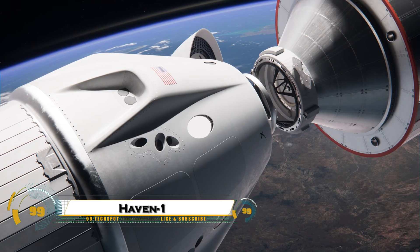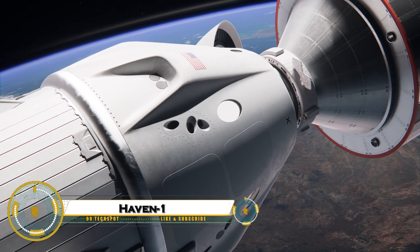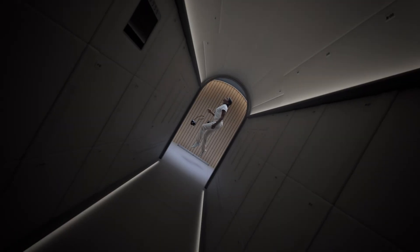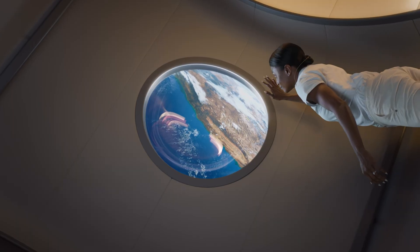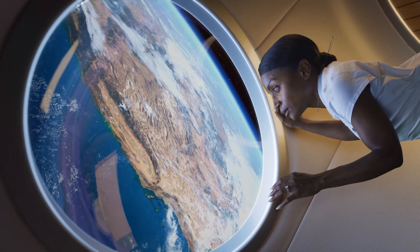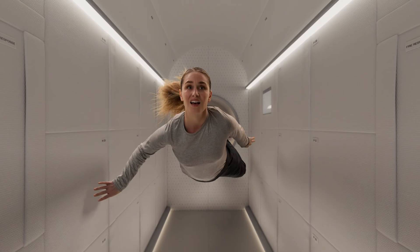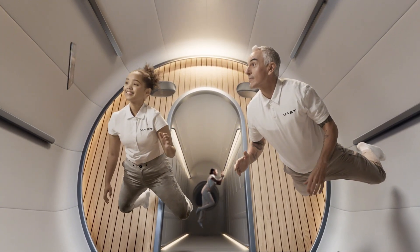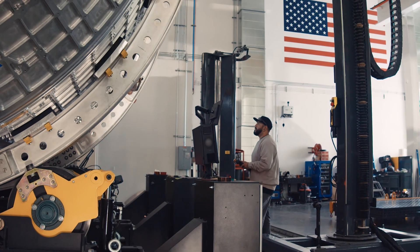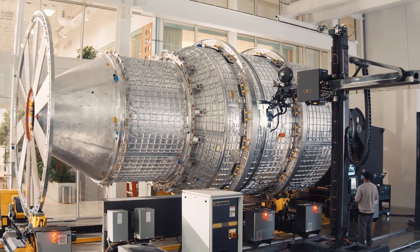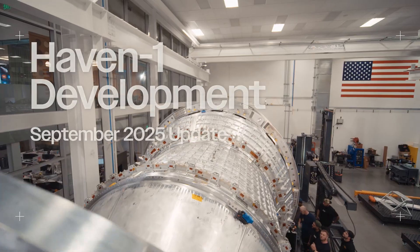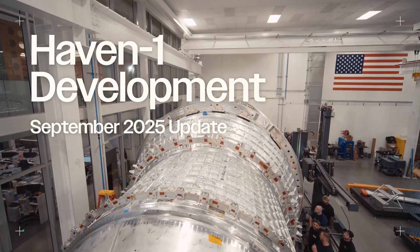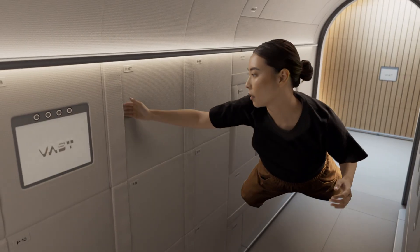Haven 1, the world's first commercial space station, marks a bold step into the future of human space exploration. Designed and built by VastSpace, Haven 1 is a fully independent orbital outpost created to support research, manufacturing, and even space tourism. Unlike traditional government stations, it's privately owned and built for flexibility, capable of hosting four astronauts at a time for extended missions.